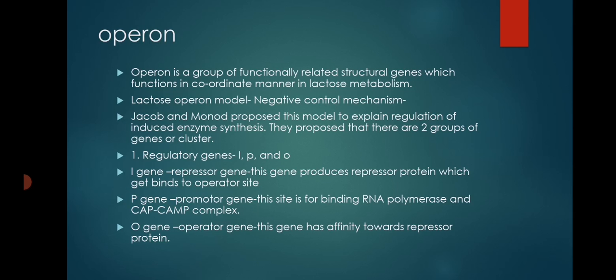The repressor gene synthesizes repressor protein, which has a binding site for the operator. The promoter gene is present between the repressor and operator genes, and has two binding sites: one for the CAP-cAMP complex (catabolite activator protein–cyclic AMP complex) and one for RNA polymerase. The operator gene has affinity for the repressor protein.